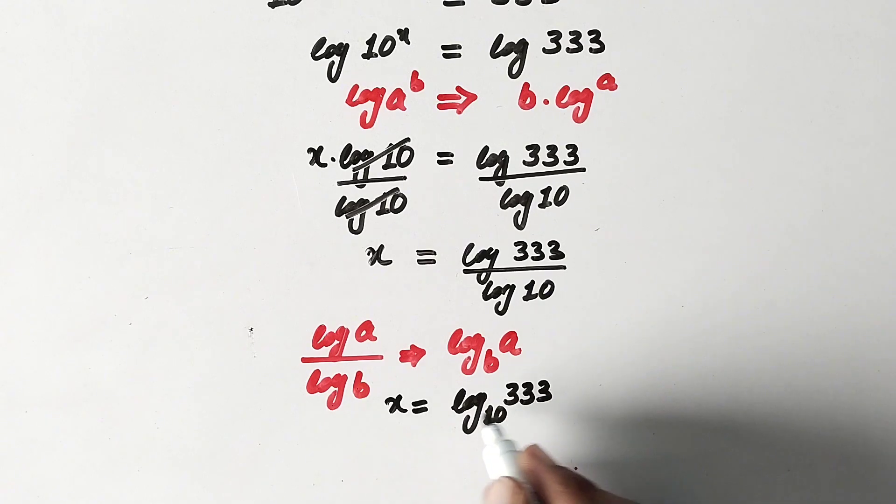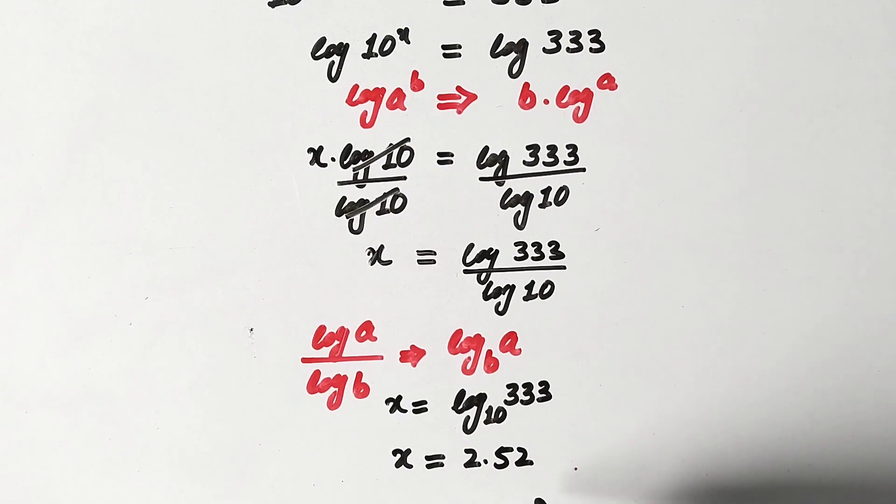And now we can use the logarithm table or calculator to find the value of log of 333. And log to base 10 is common. So the value of x will be, as the solution of log to base 10 of 333 is 2.52. And that is the solution to this problem or value of x.